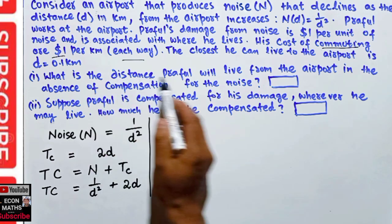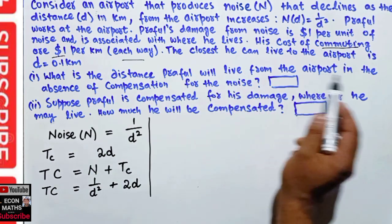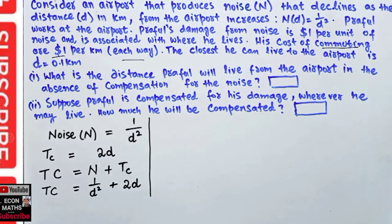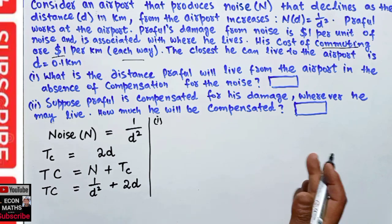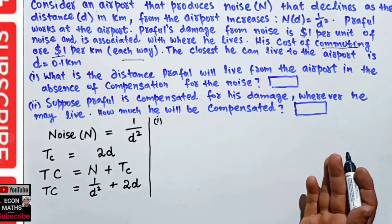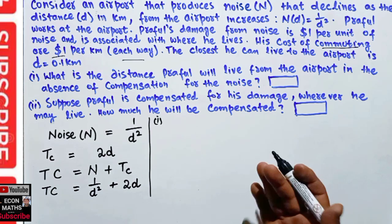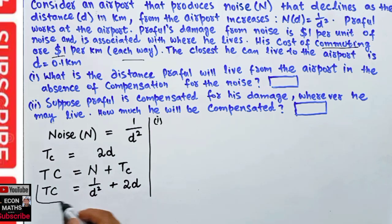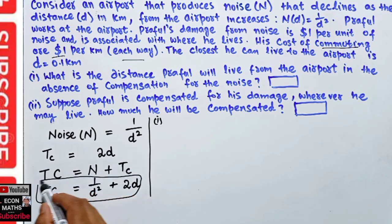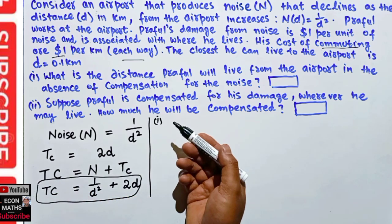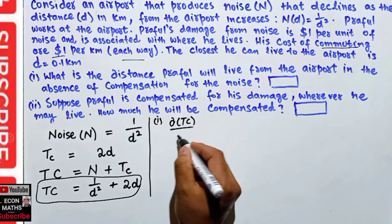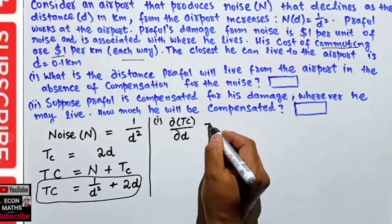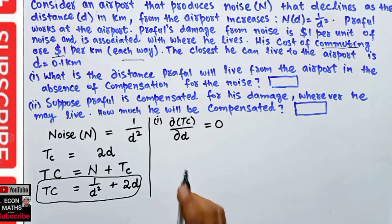The question asks for the distance Profile will live from the airport in the absence of compensation. In the absence of compensation, he will try to minimize his total cost. To minimize the total cost function, we take the derivative of the total cost with respect to d and set it equal to zero.